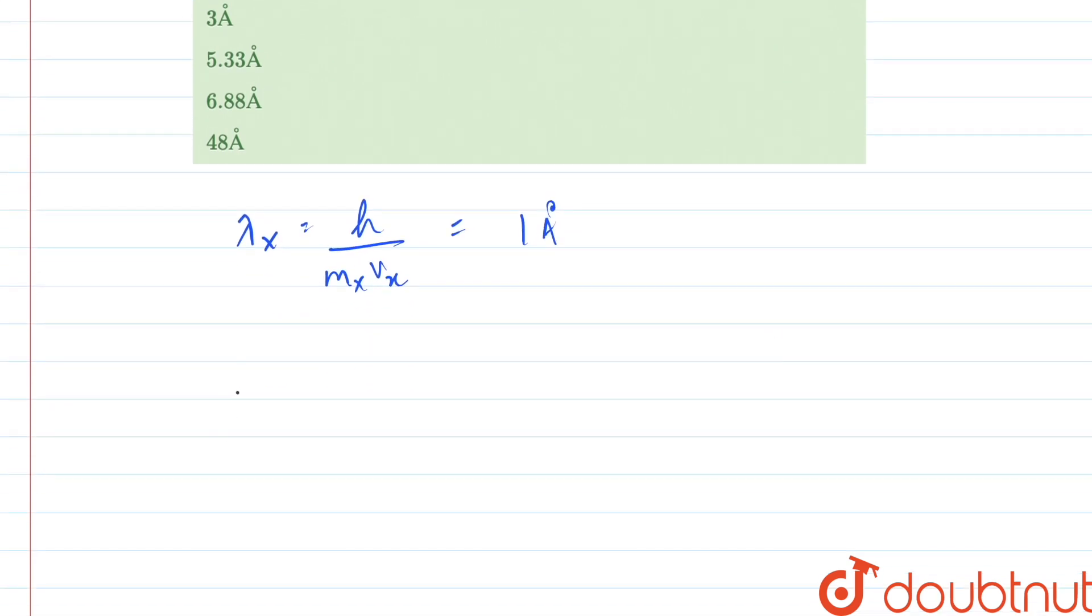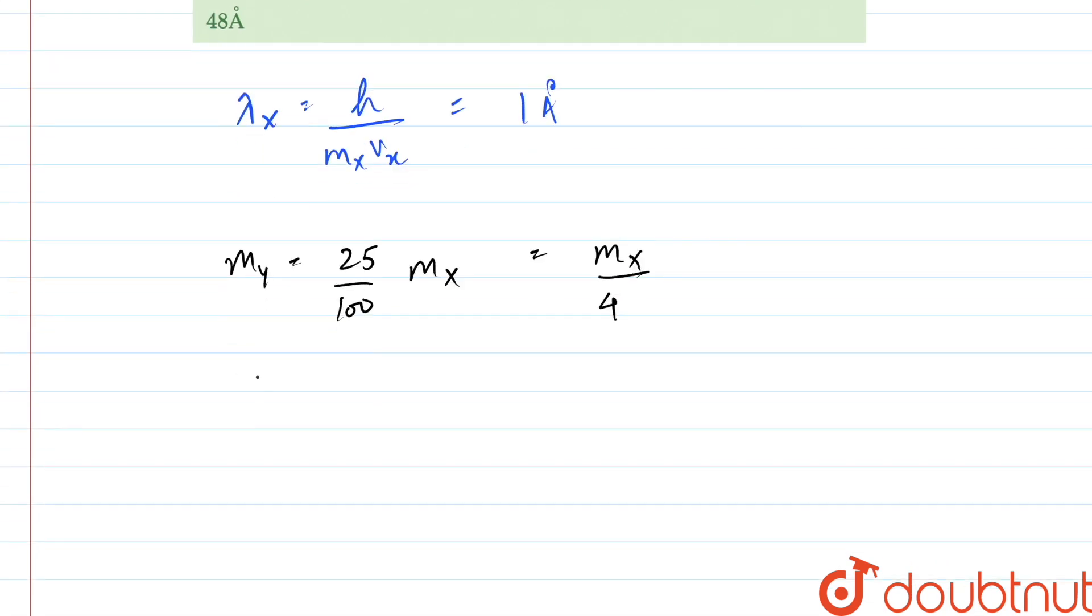Now we are given that the mass of Y is 25% that of mass of X, which comes out to be m_X/4. And the velocity of Y is 75% that of velocity of X, which is 3v_X/4.